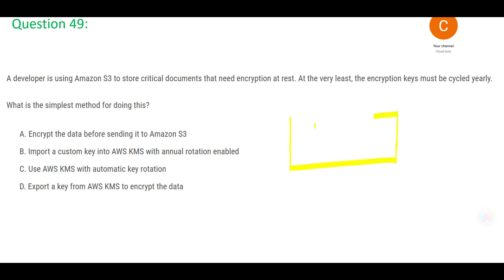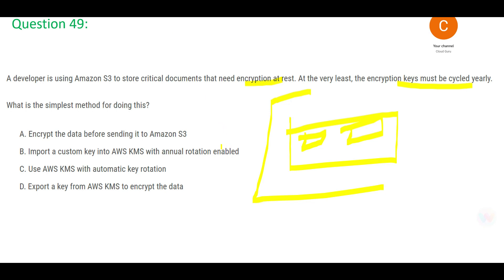This question: you have an S3 bucket and you are storing your documents there. You want to encrypt them at rest to keep them secure, but the encryption keys must be cycled on an annual basis. That means in 2019 you had one key, in 2020 it got recycled and a new key was generated — and this has to happen every year. Let's look at the options — we are looking for the simplest method.